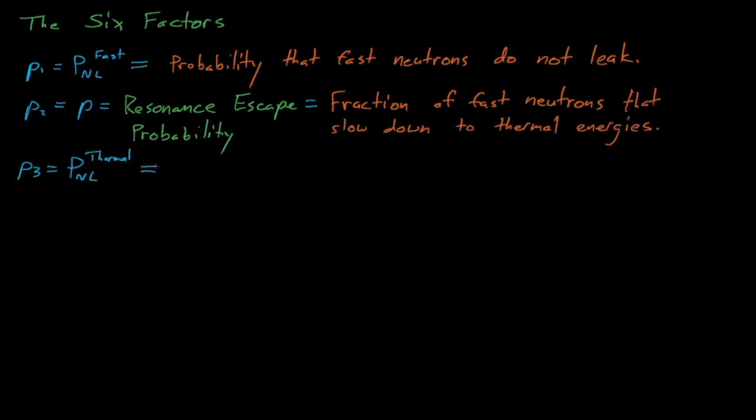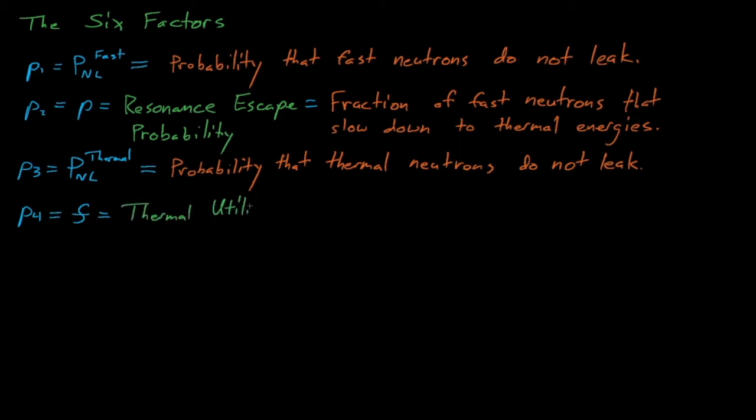P3, which is the probability that thermal neutrons don't leak, is represented by P-not-leak-thermal. P4 is a probability that a thermal neutron that is absorbed will be absorbed by fuel, which is known as the thermal utilization factor f.